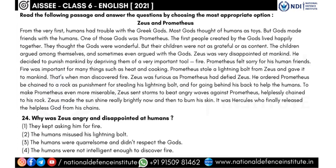Question twenty-four: why was Zeus angry and disappointed with humans? The passage says the children argued among themselves and sometimes argued with the gods. Options include 'they kept asking for fire' and 'the humans misused the lightning bolt' — both incorrect. The correct answer is: the humans were quarrelsome and did not respect the gods.